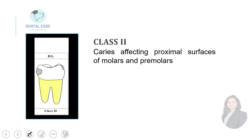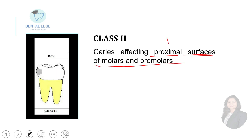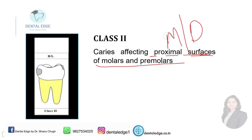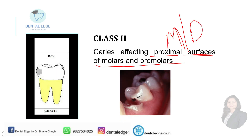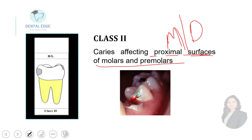Now let's see what is class two. Class two is caries affecting the proximal surface — either mesial or distal — of molars and premolars. For example, this is a caries on the mesial surface of a premolar.